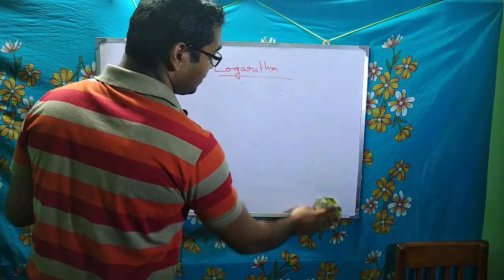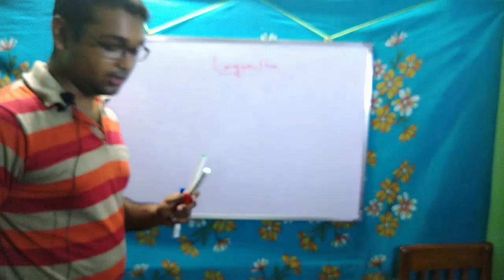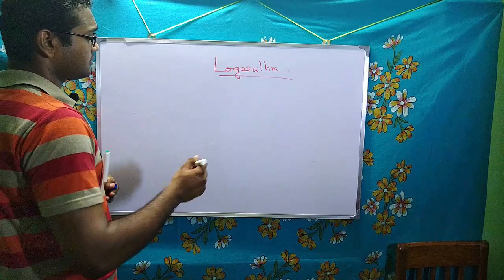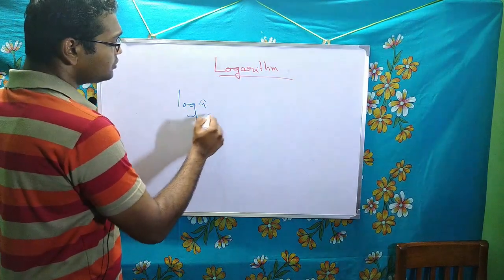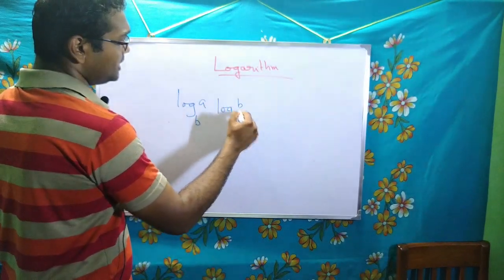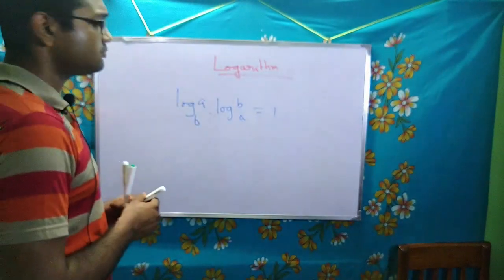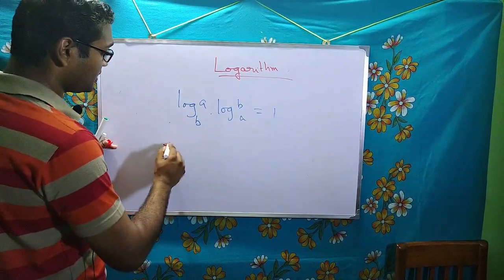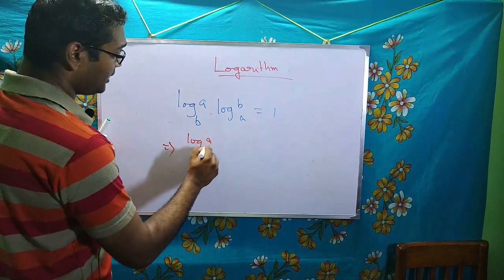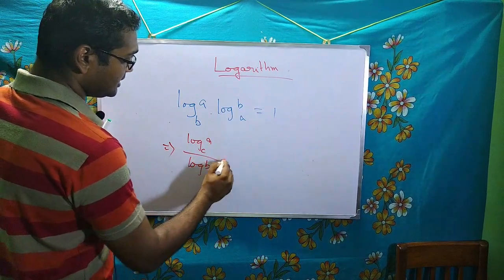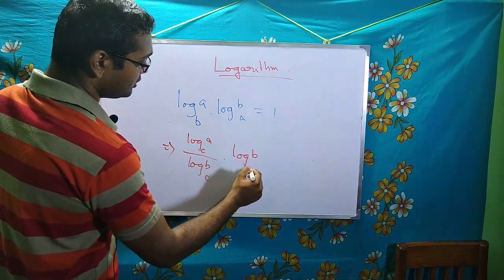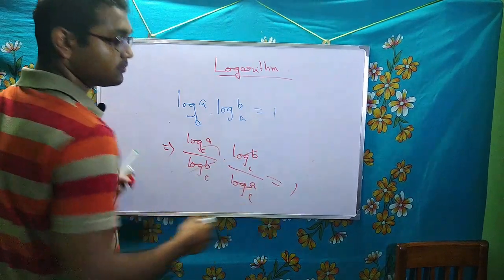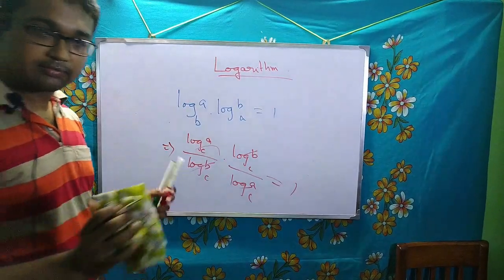Property 4 is a direct application: log of a to the base b times log of b to the base a equals 1. Using the previous formula, we write each log as a ratio with base c. The numerator of one cancels the denominator of the other, giving 1. Hence proved.